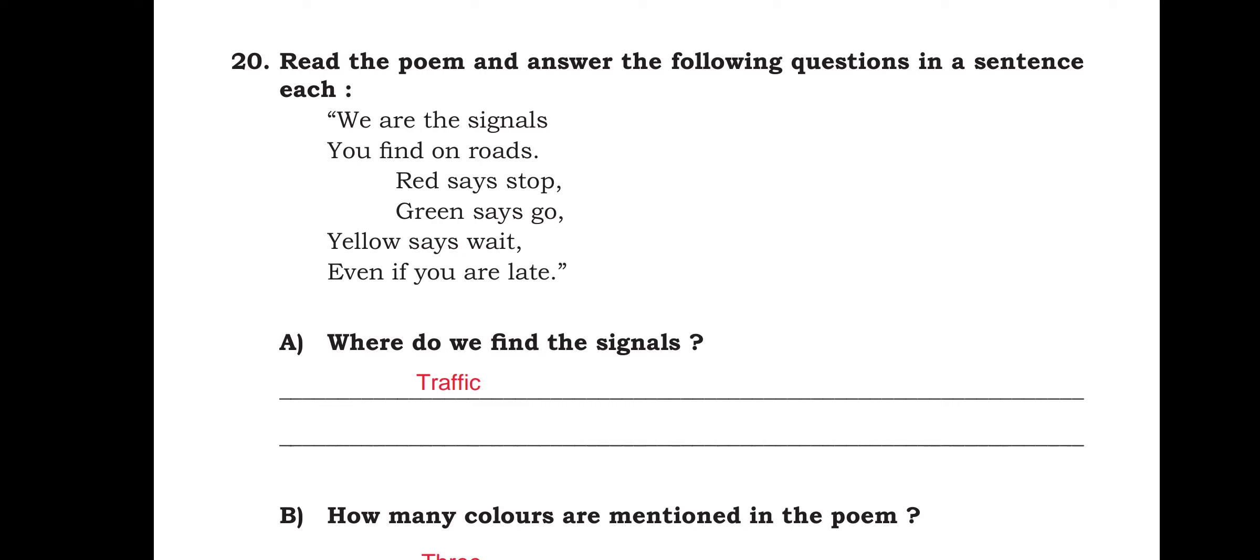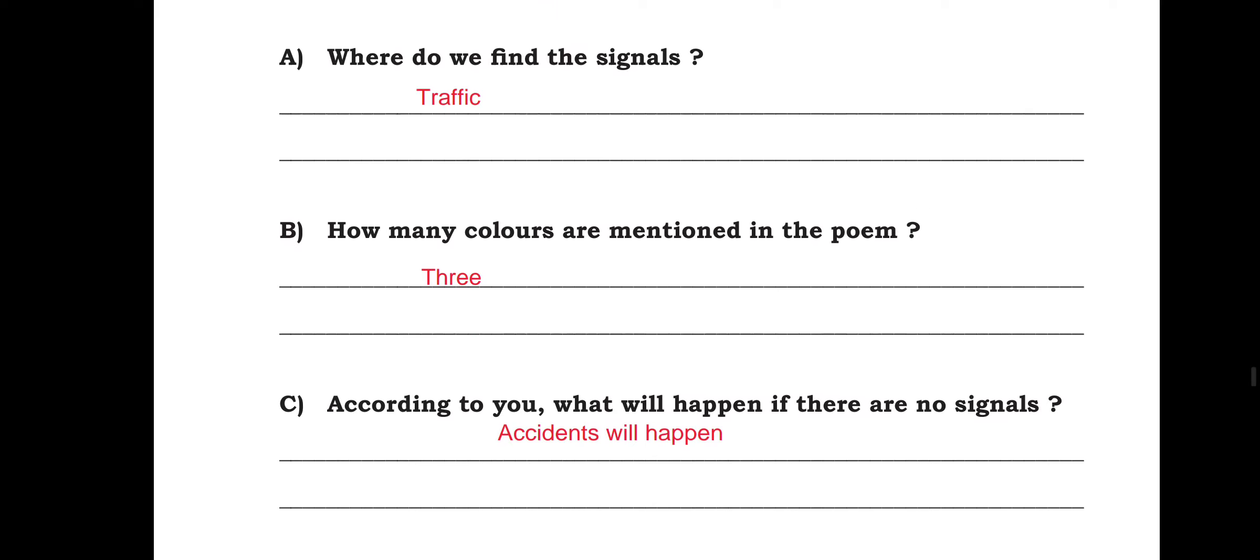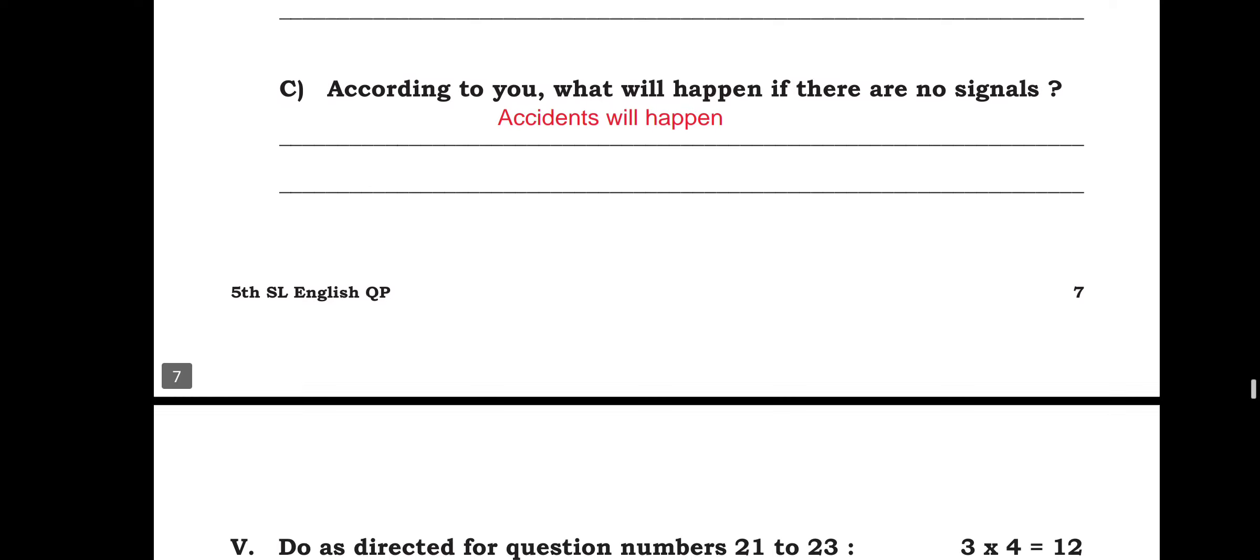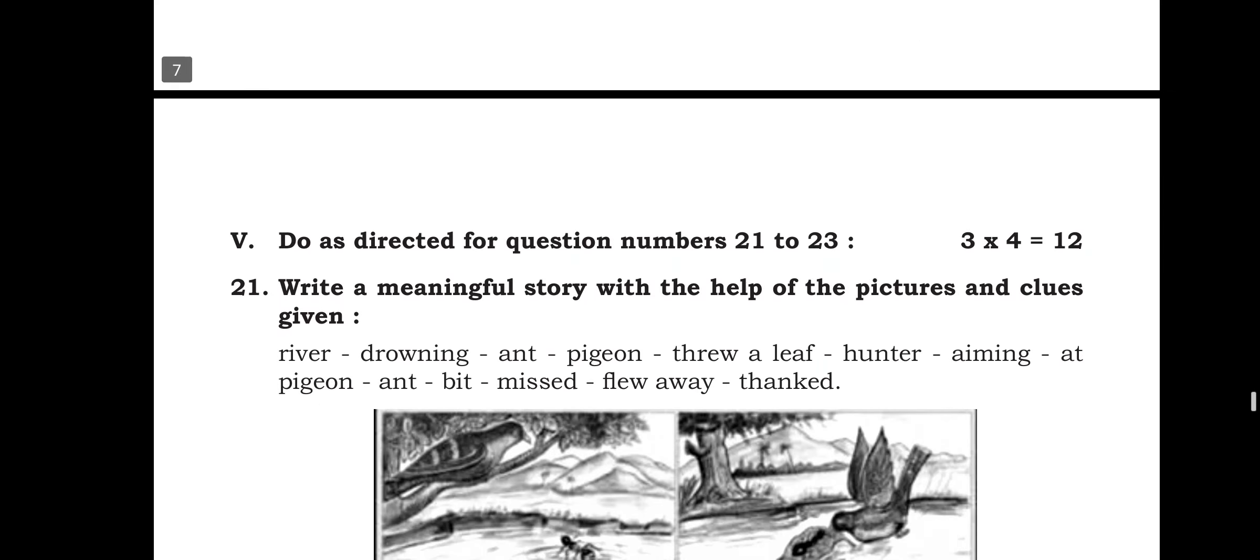Read the poem and answer the following questions in a sentence each. We are the signals you find on roads. Red says stop. Green says go. Yellow says wait, even if you are late. Where do we find the signals? We find the signals in the traffic. How many colors are mentioned in the poem? There are 3 colors mentioned in the poem. According to you, what will happen if there are no signals? If there are no signals, accidents will happen.